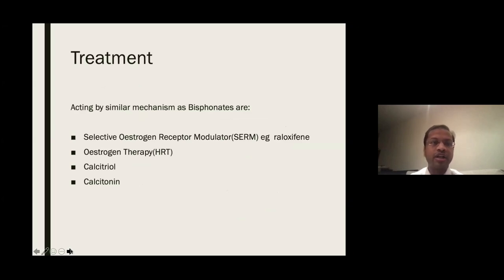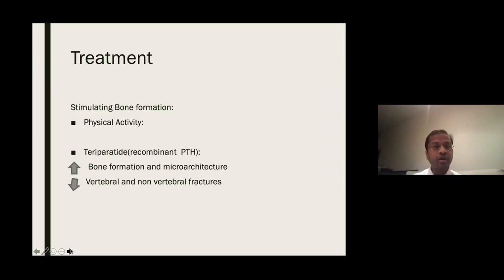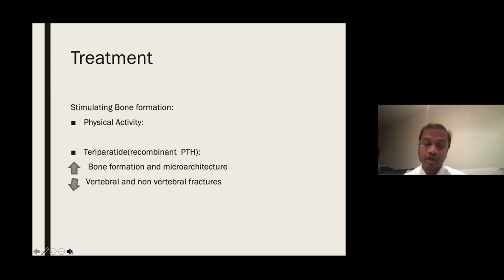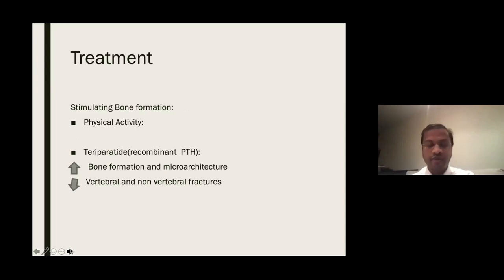Apart from bisphosphonates, one needs to know about second- and third-line drugs for osteoporosis treatment, which include SERMs — selective estrogen receptor modulators — estrogen therapy, calcitriol, and calcitonin. Bone formation can also be stimulated: the role of physical activity can't be emphasized enough, while teriparatide — a recombinant parathyroid hormone — acts by increasing bone formation and microarchitecture, reducing the incidence of vertebral and non-vertebral fractures.